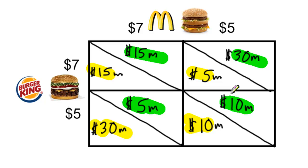We can use this table to analyze the most likely outcome in a game in which the two firms are deciding between a high price of seven dollars or a low price of five dollars.